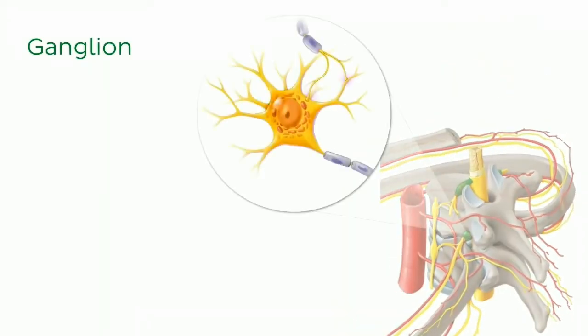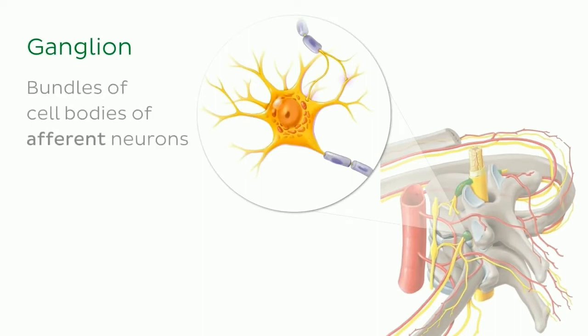If we take a closer look at this image, I can show you that they are collections or bundles of the cell bodies of afferent neurons.